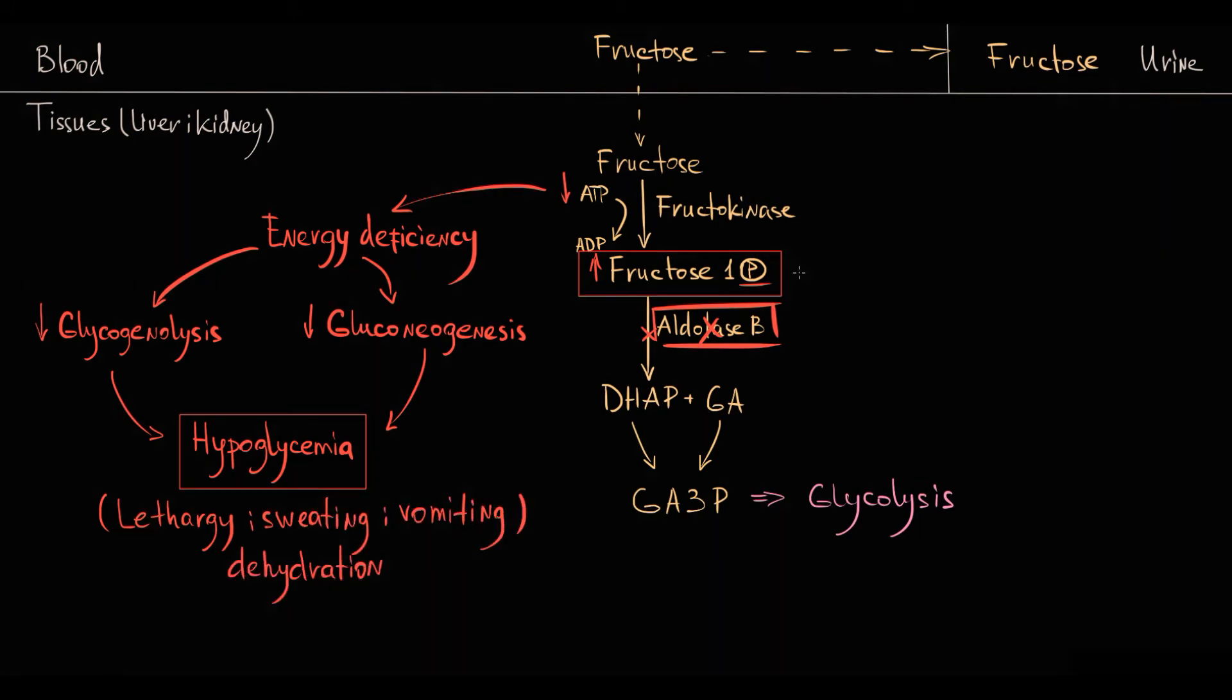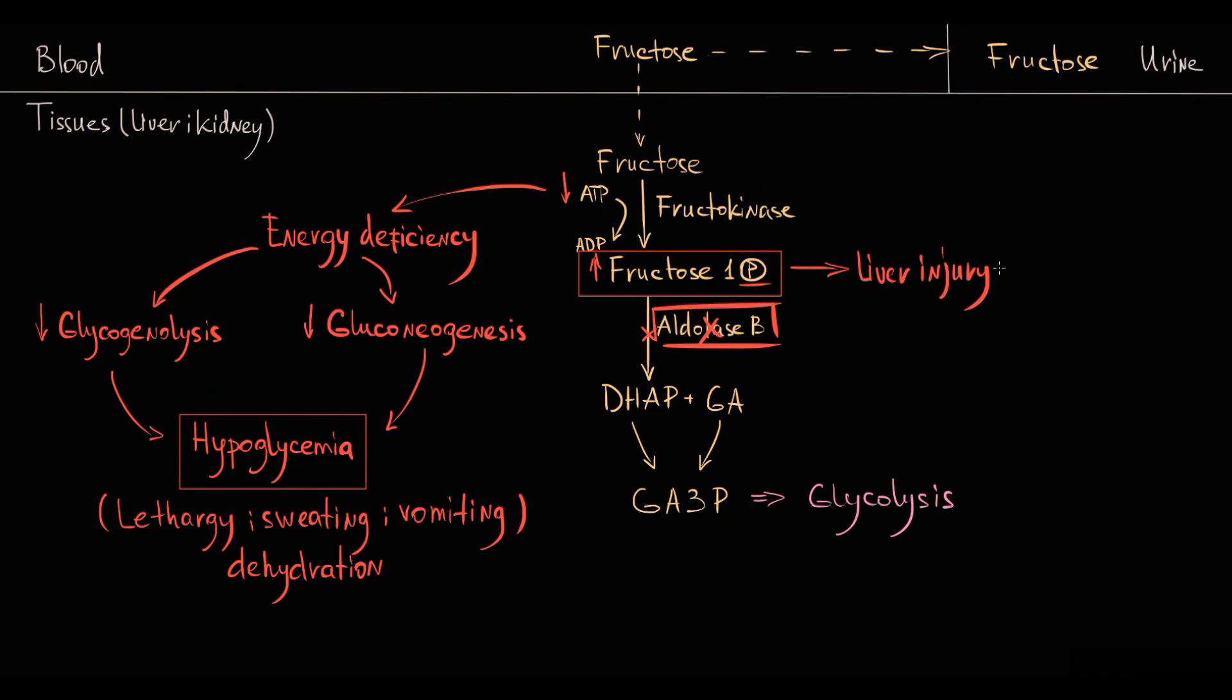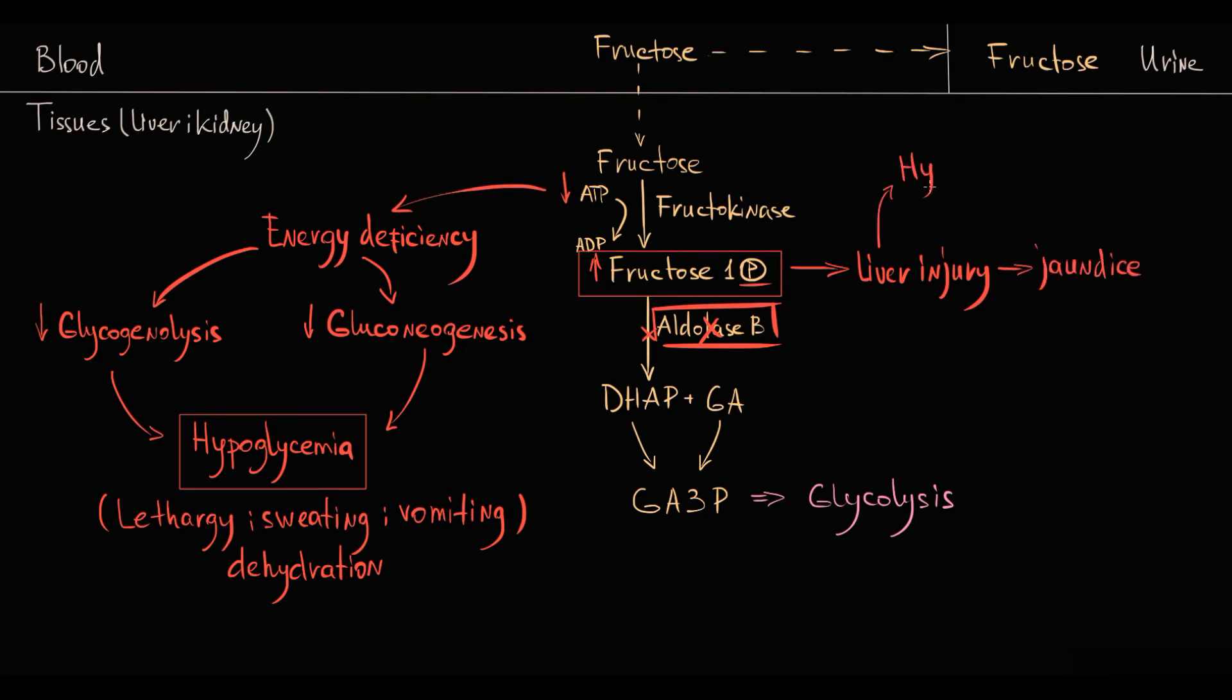Also, fructose 1-phosphate by itself in excessive amounts is a toxic metabolite. So direct toxicity of fructose 1-phosphate causes severe damage to the liver and kidney tissues. Damage to the liver tissue impairs liver detoxification function and causes jaundice and hypoammonemia. Also, it prolongs prothrombin time and activated partial thromboplastin time.